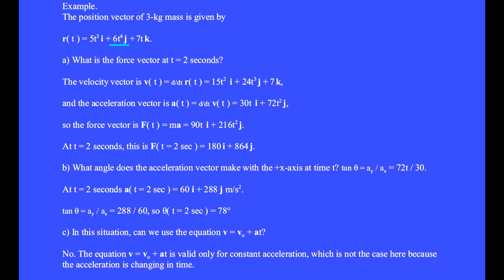The time derivative of 6t⁴ is 24t³, which is the j-component. The time derivative of 7t is 7, which is the k-component.